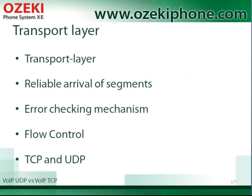So first of all, what are UDP and TCP? UDP and TCP are the two most popular protocols that are in the transport layer of the TCP/IP model. The transport layer is responsible for ensuring the reliable arrival of segments. Furthermore, it provides error-checking mechanisms and data flow controls.